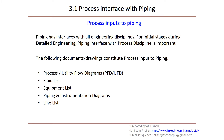Piping has interfaces with all engineering disciplines. At the initial stage during detail engineering, piping interface with process discipline is very important — that is why we have taken up this presentation on process interface with piping. To start any piping activity, the first input required is from process discipline. We need to understand how we are going to interact with process discipline to get all kinds of input details. We have listed out five categories: process and utility flow diagram, BFD,